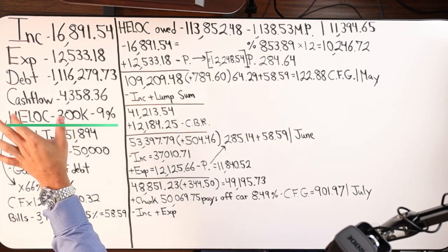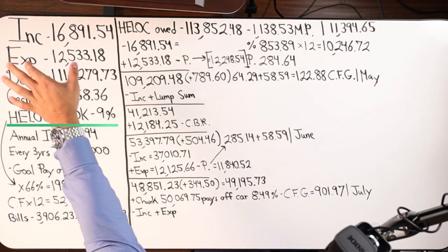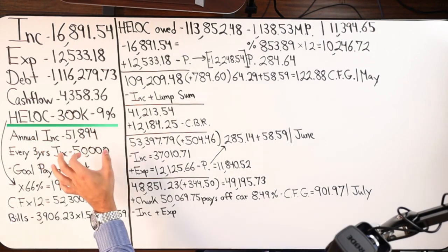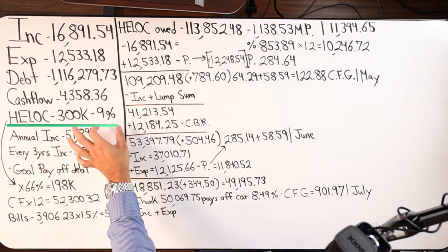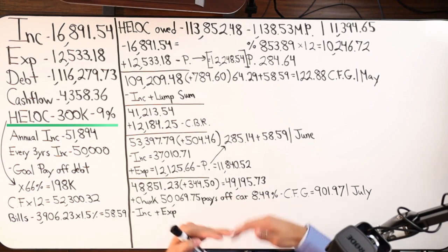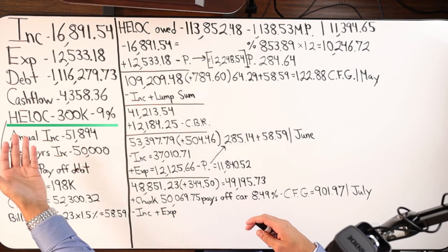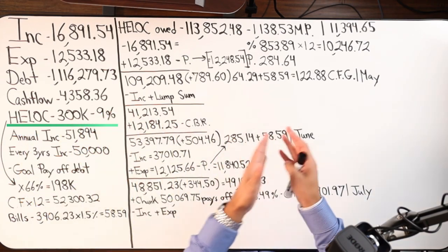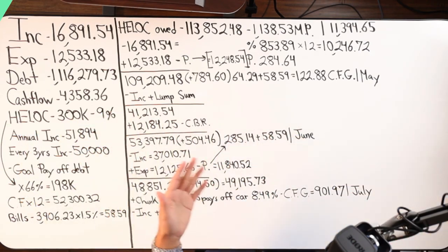We have a home equity line of credit in the second position on their primary residence. $300,000 is the credit limit. 9% is the interest rate. You might be thinking, dang, that's a pretty high rate. But again, in this environment, I'm going to be producing more and more content showing you how to do this concept of velocity banking, even with high interest rates.